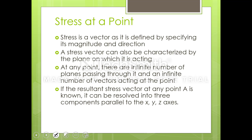Stress — we have a vector, since it is having a magnitude and direction. It is also defined or characterized by the plane on which it is acting. Which plane is it acting on? That gives the magnitude and direction. There can be any number of planes passing through this point. Here the point is to pass the plane in the orientation.